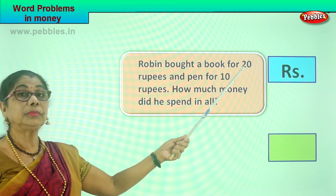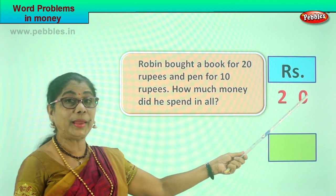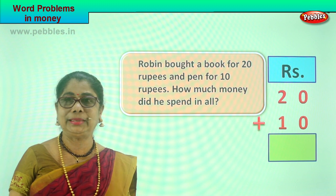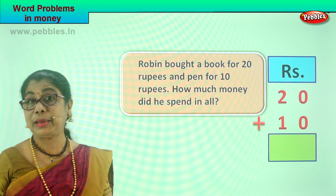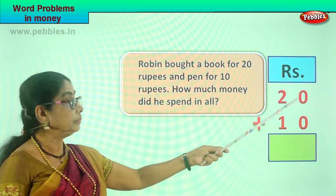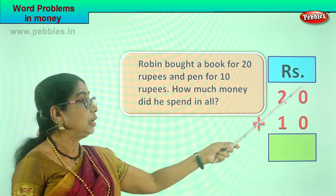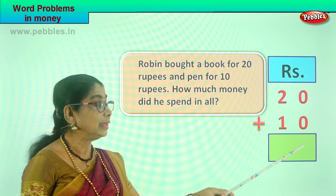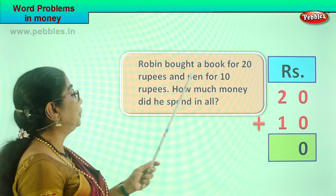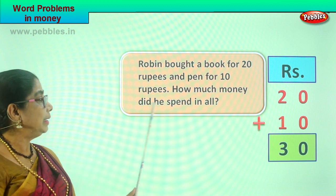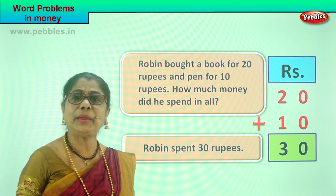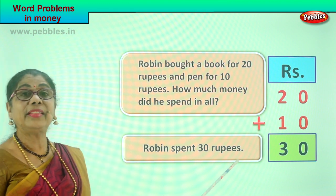What is the cost of the book? 20 rupees. So we write here 20. Plus, what is the cost of the pen? 10 rupees. So we write plus 10 rupees. Now they are asking how much money did he spend in all, so we have to add these two together and find the total amount spent by Robin. First we go to the ones place — we have two zeros. Zero plus zero is zero. Then we go to the tens place: two plus one is three. So we write number three here. How much money did Robin spend in all? Robin spent rupees 30 in all.